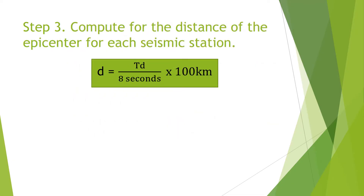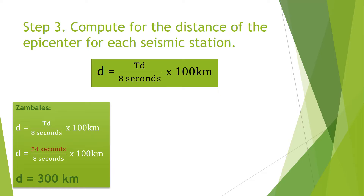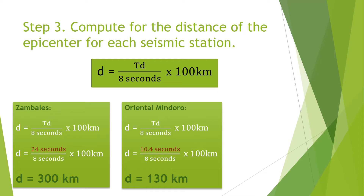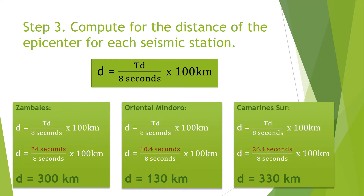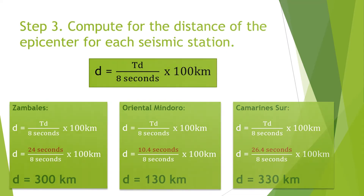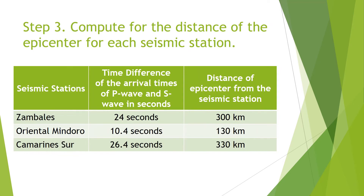For the next step, you will compute the distance of the epicenter from each of the seismic stations. The distance of the epicenter equals the time difference divided by 8 seconds, multiplied by 100 kilometers. Using this formula for Zambales gives an answer of 300 kilometers. The earthquake's epicenter is 130 kilometers from Oriental Mindoro and 330 kilometers from Camarines Sur. The table shows the time differences and the computed distances from each seismic station.